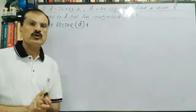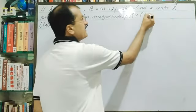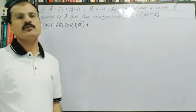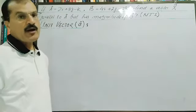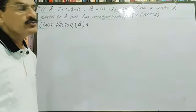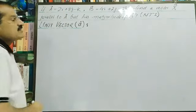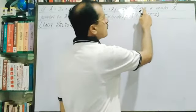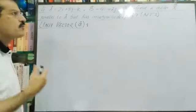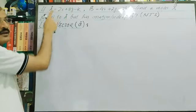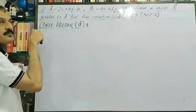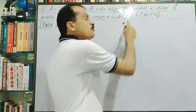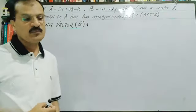The problem we will work on: if vector A is given with three rectangular components, and vector B is also given, you have to find a new vector X which is parallel to vector A but has the magnitude of vector B.